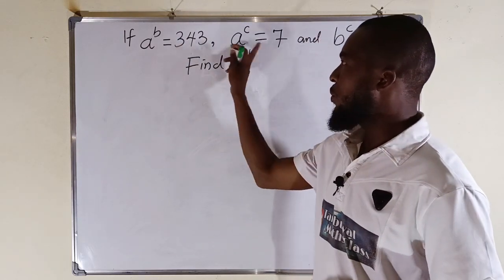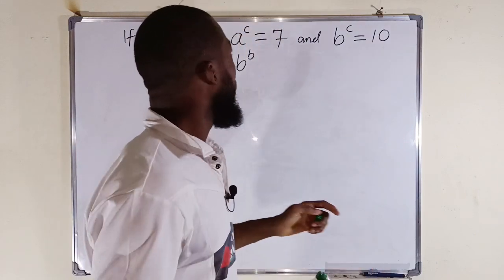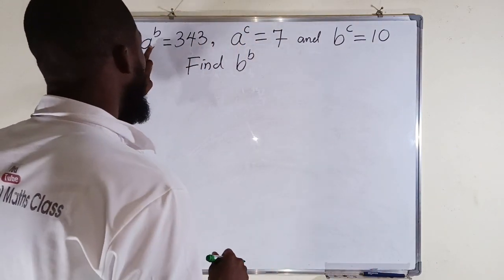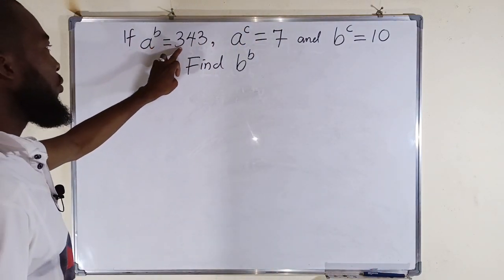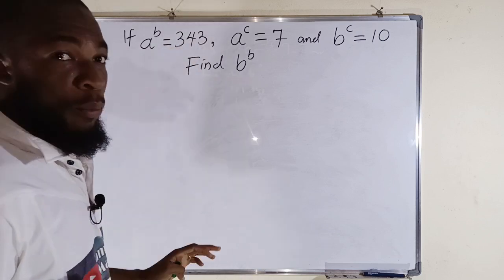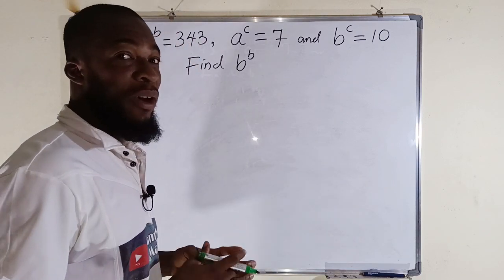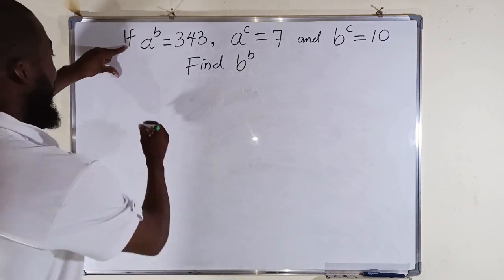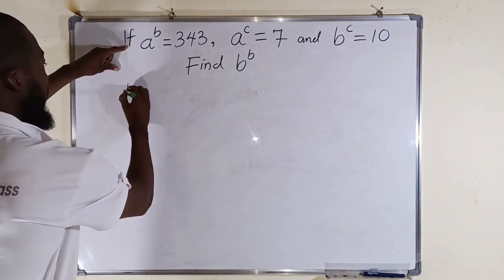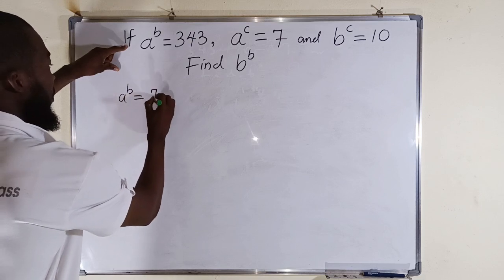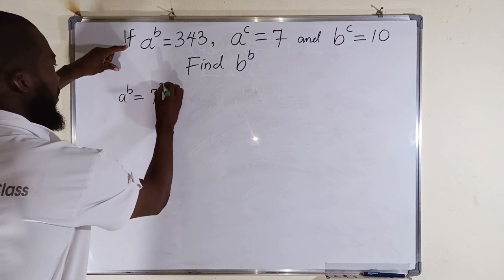Okay, let's start with these two equations. The first one: a to the power of b is equal to 343. But I know 343 can be written as 7 to the power of 3, which implies that a to the power of b is equal to 7 to the power of 3.